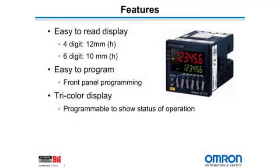Before we begin programming the H7CX-N multi-function counter, let's review some of the key features that it has to offer. First, the easy-to-read process value display. If you have the four-digit model, the process value will be 12 millimeters high. If you have the six-digit model, the process value will be 10 millimeters high.